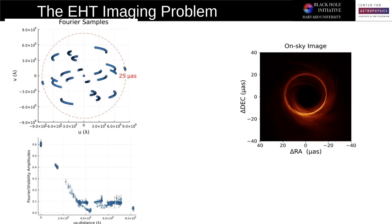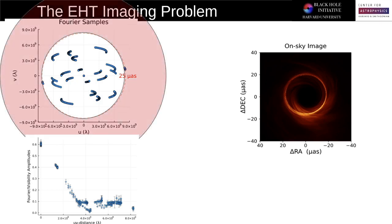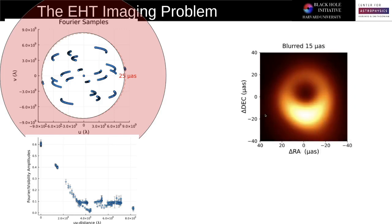One is due to the finite size of the Earth. What this means is that we actually aren't able to sample very long Fourier components, which correspond to very fine image structure. And so what we actually have is not this sharp image here on the right, but rather a blurred version of it. However, this is not the worst of it.